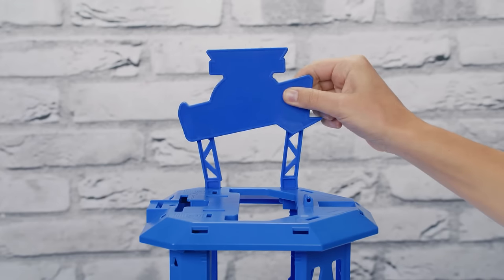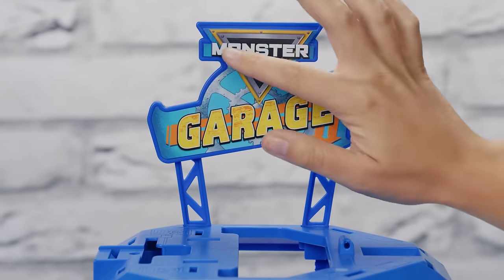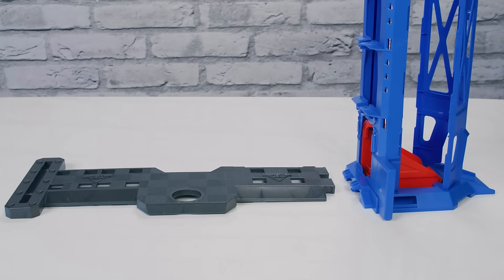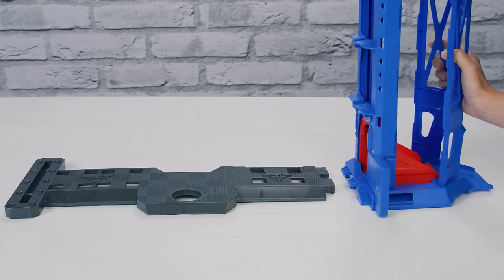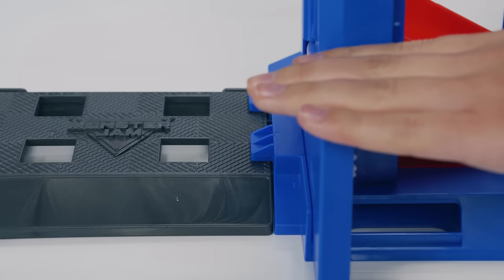Connect the sign to the top of the garage and add the Monster Garage sticker to the sign. Next, attach the bottom level to the elevator base. Line up the connector points and snap into place.